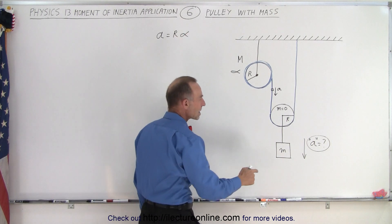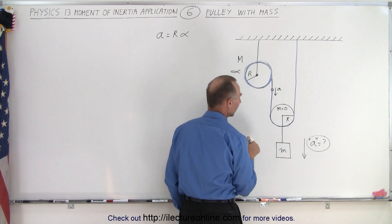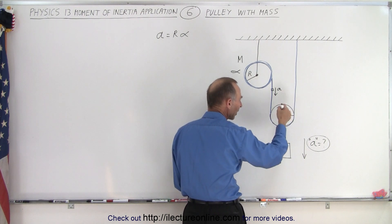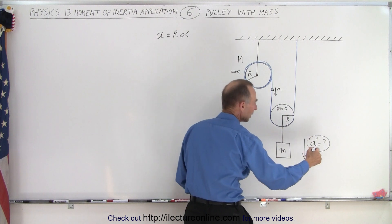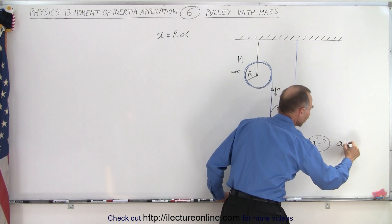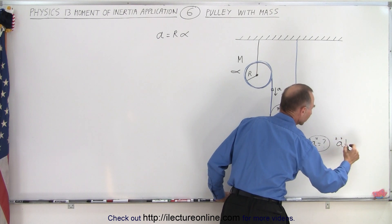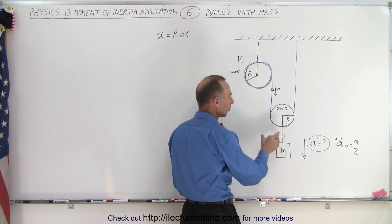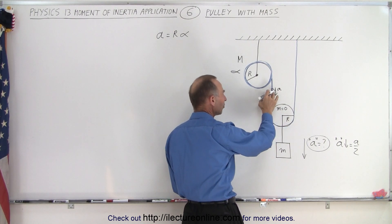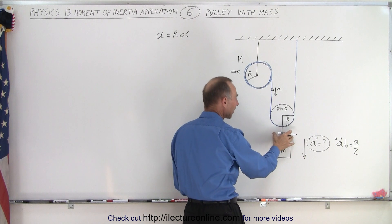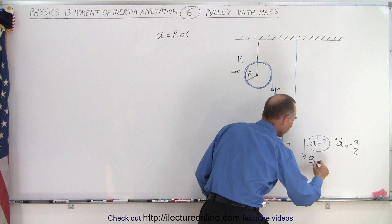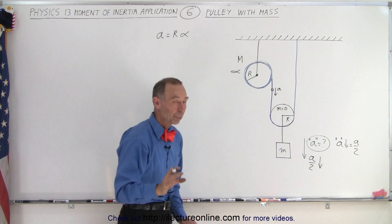But how does this acceleration of the string relate to the acceleration of the mass? Notice that as the string goes down, it allows the pulley to rotate, but part of it becomes free on the other side. It turns out the acceleration of the mass downward is actually half the acceleration of the string on that side. So the mass will come down at half the speed — the acceleration will be a over 2 in the downward direction — and that's important to note.